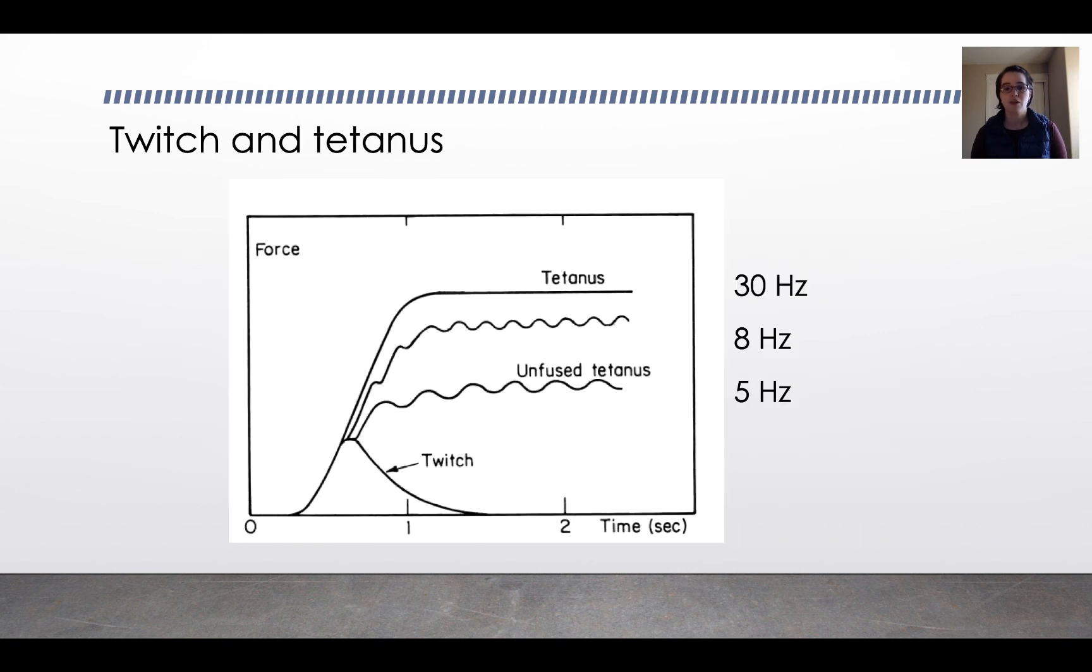If you do this enough times, you actually can lead to something called tetanus, which is where your muscle contracts continuously. And that's actually what gives name to the disease tetanus, where your muscles are stimulated and just totally contracted. The stimulation rate to achieve tetanus is about 30 hertz. Lower than that, at about 5 hertz, you start to get unfused tetanus, 8 hertz, and then you get up to 30 hertz. Compared to a single twitch, tetanus can generate quite a bit of force, about three or four times as much.